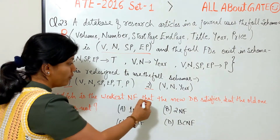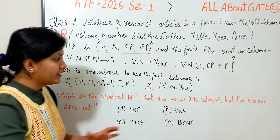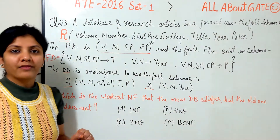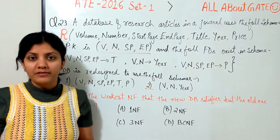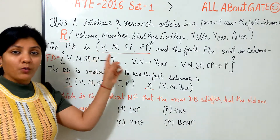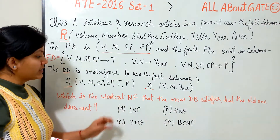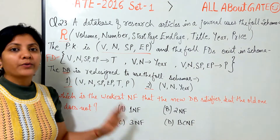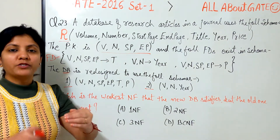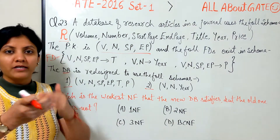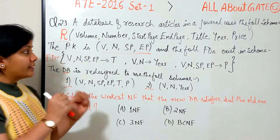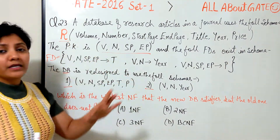The question actually asks: which is the weakest normal form that the new database satisfies but the old one does not? This simply means: what was the normal form of the older relation and what is the normal form of the newer relation? If you have decomposed, that means you have gone into a higher normal form, so you just have to find that out.